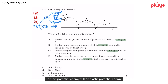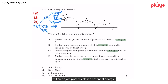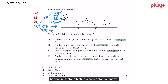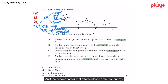The last type of potential energy is elastic potential energy. Under what circumstances will an object possess elastic potential energy? When we stretch or compress a spring, the spring possesses elastic potential energy. The first factor affecting it is how much the object is being stretched or compressed, and the second factor is the stiffness of the elastic object.